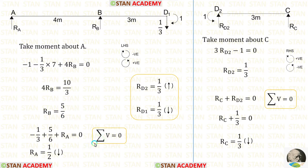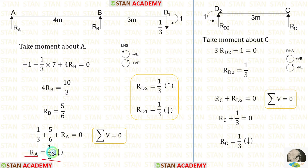Now let us apply the rule sigma V equals 0 and find out RA. For RA, we will get a negative value, which means our assumption is wrong. We assumed that RA is acting upwards, but actually it is acting downwards.